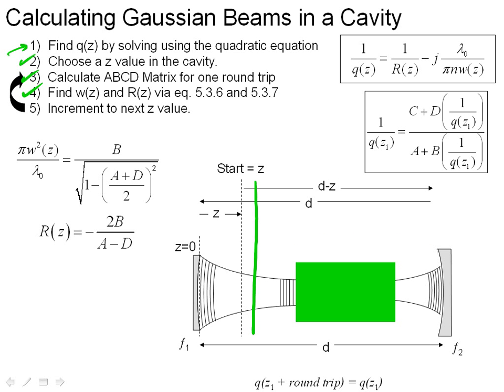And then once we've incremented the next Z value, we go back, calculate the ABCD matrix, find W of Z and R of Z. And this process, if you had to do it by hand, would be extraordinarily tedious.